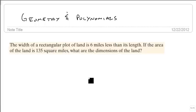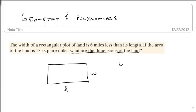The width of a rectangular plot of land is 6 miles less than its length, and the area is 135 square miles, and we're asked to find the dimensions of the land. So we've got a rectangular plot of land with a length and a width, and we're told that the width is 6 less than the length.